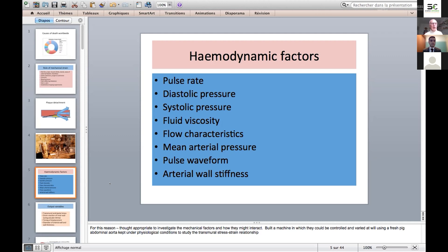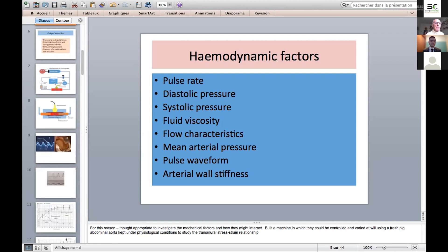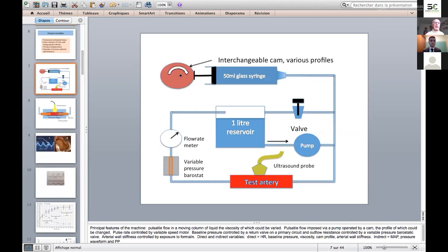To explain the nature of the machine, basically we have a fluid reservoir containing the fluid we're perfusing the vessel with. This is passed through a primary return circuit using a pump and a return valve by which we can produce varying input pressure, which goes into the test artery, flows through the test artery, and out through a variable pressure barostatic valve, which enables us to control the outflow resistance. Pulsatility is imposed on this column using a syringe operated by a cam.